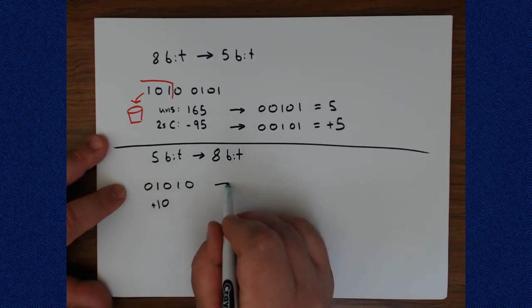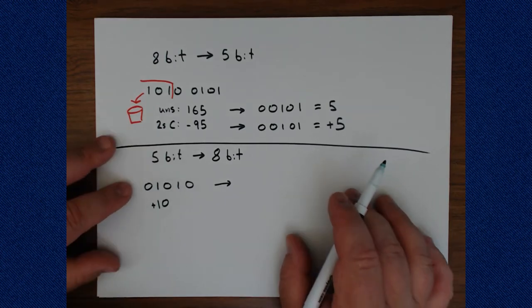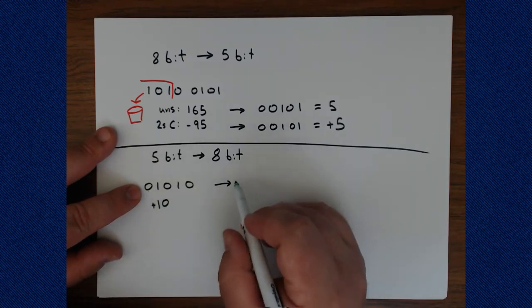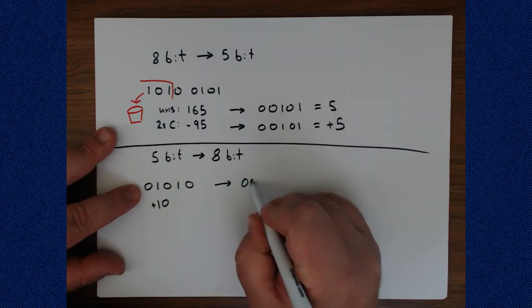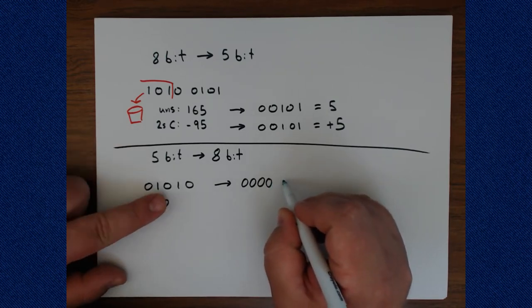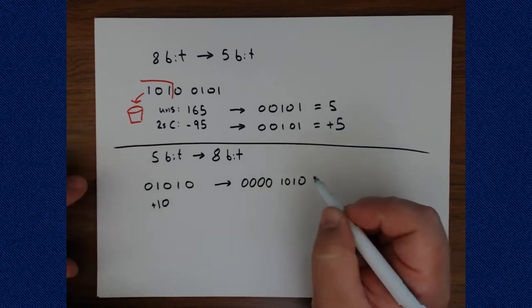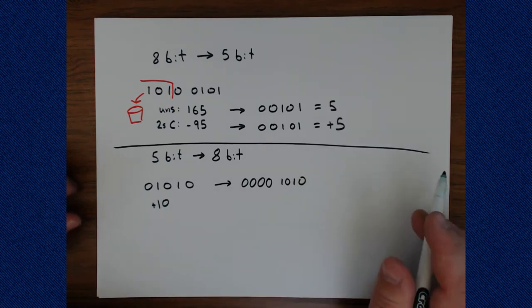So post-conversion, it doesn't matter whether it's signed or unsigned because the highest order bit in the original thing was a zero. So we can just add zeros to make it eight bits. So we're missing three bits between the two. So we just can put three zeros here. And then we put the original high order bit and then the rest of the bits, one, zero, one, zero.